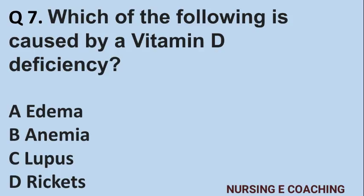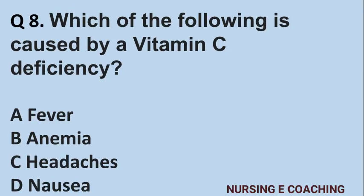Question number 7: Which of the following is caused by a Vitamin D deficiency? A) Edema, B) Anemia, C) Lupus, D) Rickets. Answer is D) Rickets.